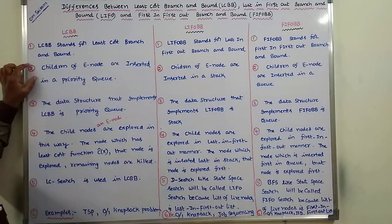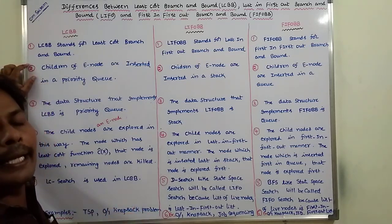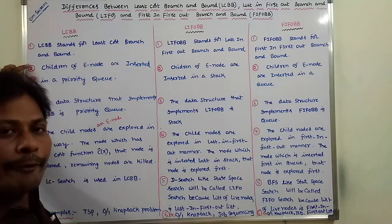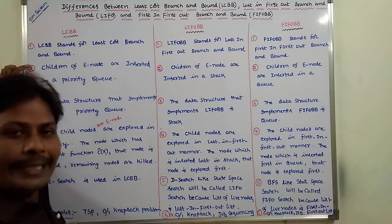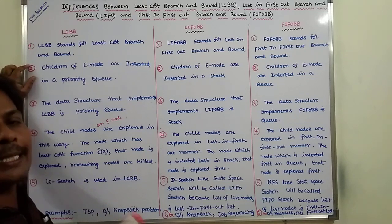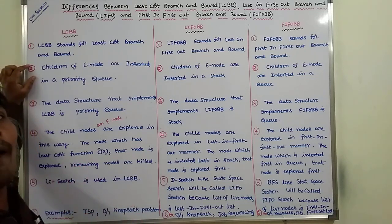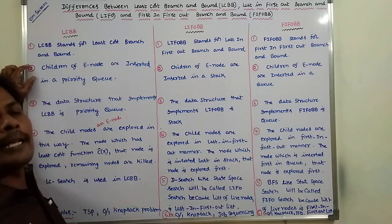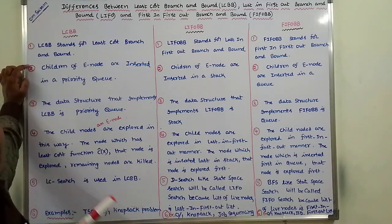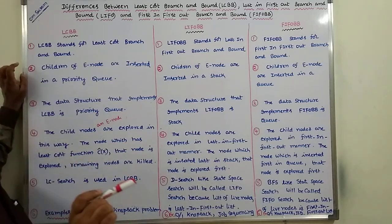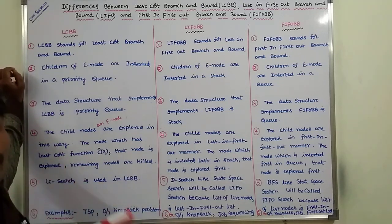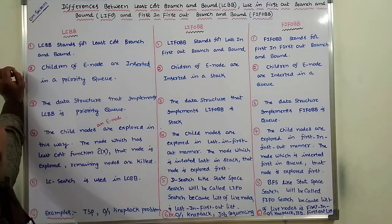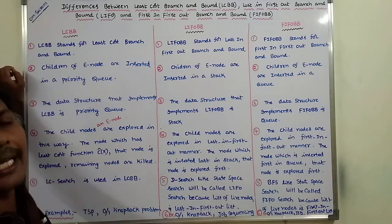There are three types of nodes available in a state space tree. First one is LIFE node, second one is E node, and third one is DEAD node. A LIFE node is a node which is created but its children are not yet generated. An E node is a LIFE node whose children are also being generated. A DEAD node is a node which is already created and its children are also generated, but there is no use of that node, so that node is killed.